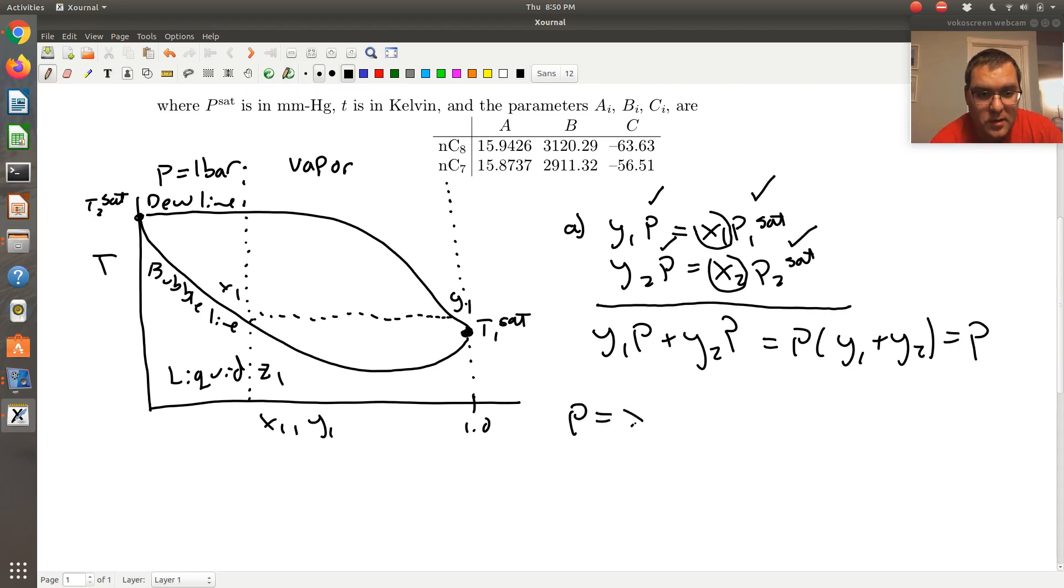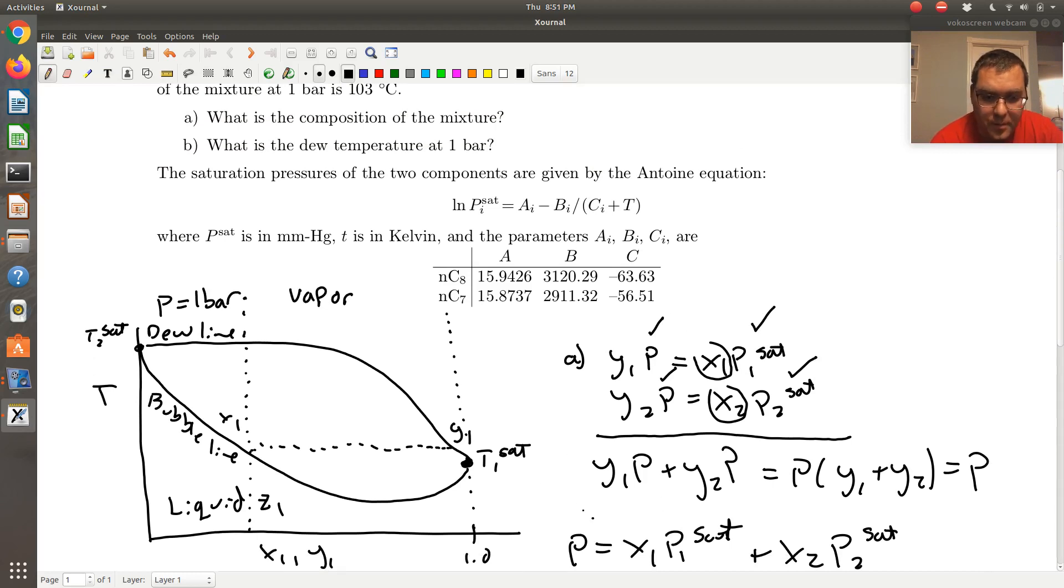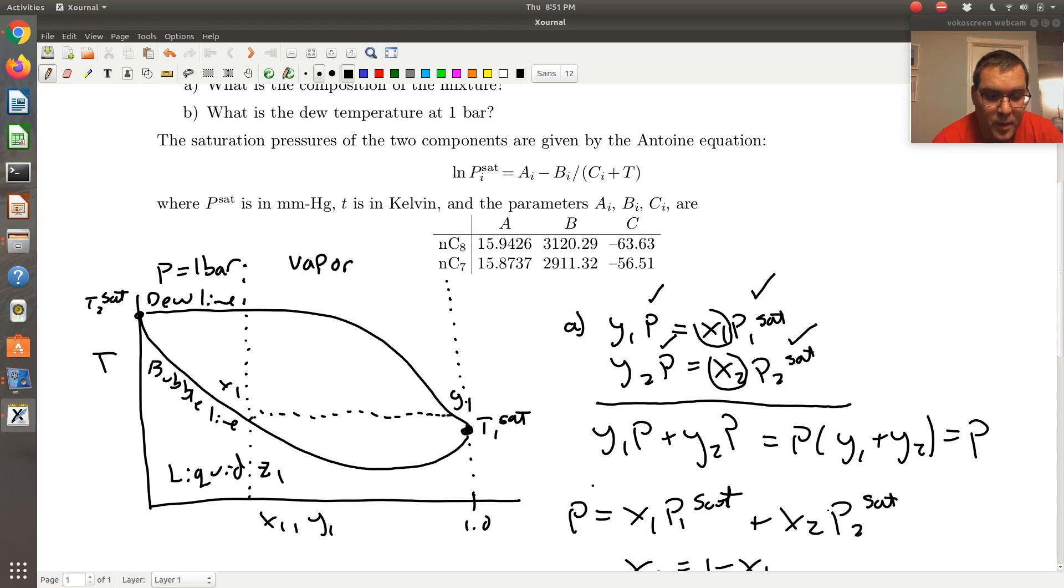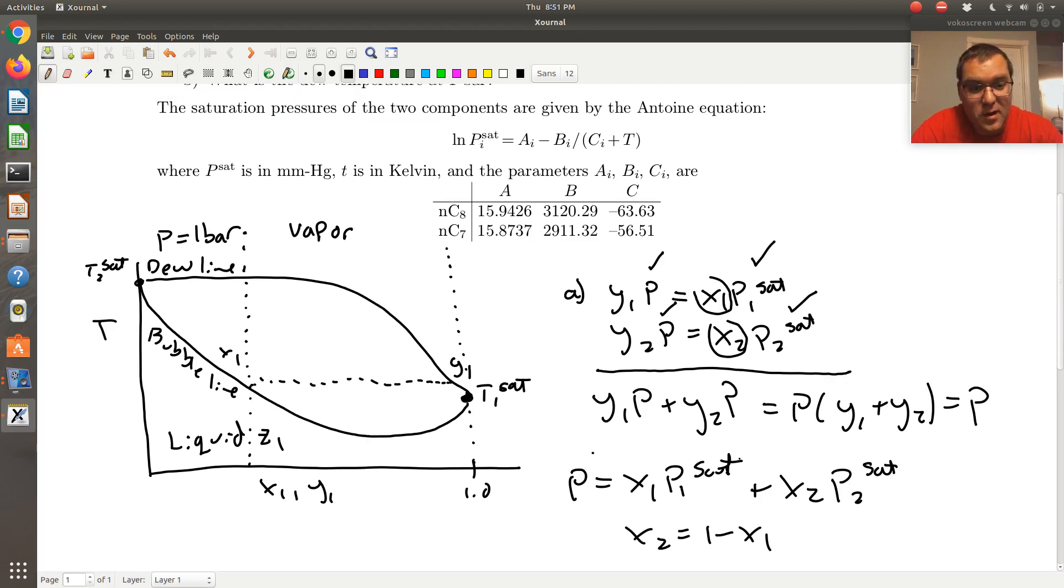So when I add them together, I get P is equal to X1*P1^sat plus X2*P2^sat. Where I can plug in X2 is 1 minus X1. So this is P^bub. So P is equal to 1 bar. P1^sat and P2^sat, I know the temperature at my bubble point is 103 degrees C. So I can plug that into my Antoine equation and get P1^sat and P2^sat. So the only unknown in this equation is X1 and X2. And hence, since X2 is equal to 1 minus X1, the only unknown is X1. So I can readily use that to solve for X1. And my bubble point, X1 is just equal to Z1, which would give me the composition of my mixture. So I just do a bubble P calculation and solve for X.